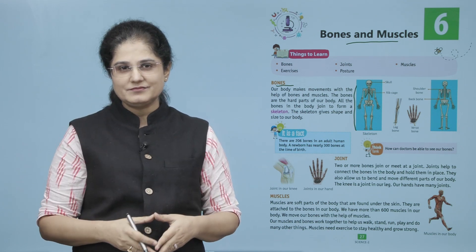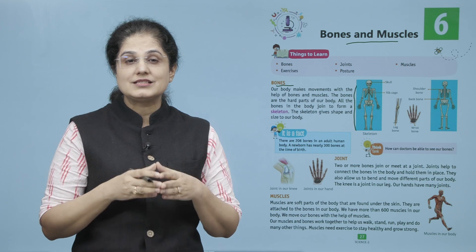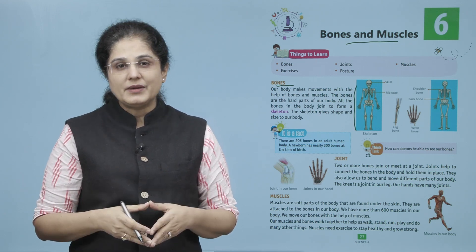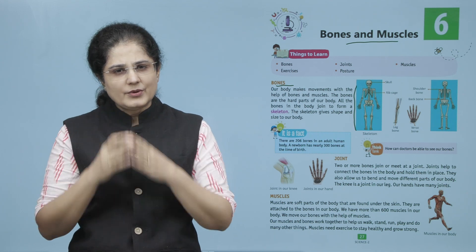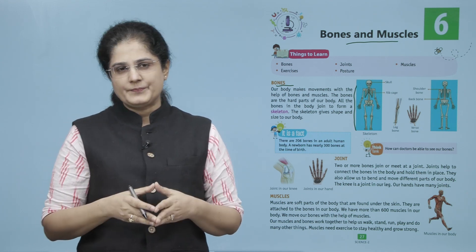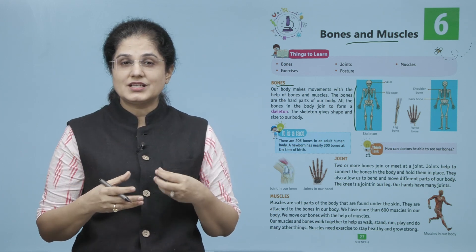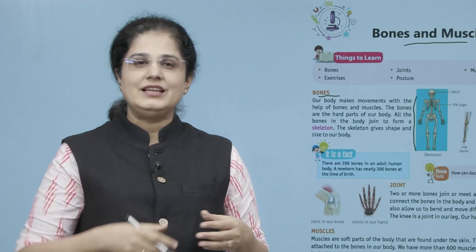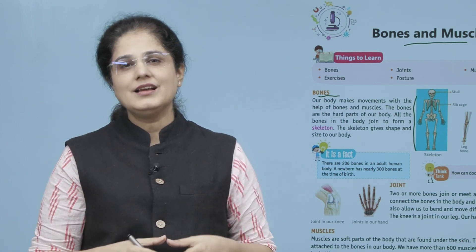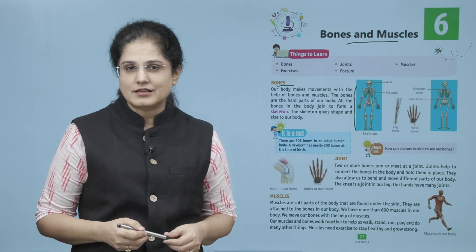Now it is a fact: there are 206 bones in an adult human body. A newborn baby has nearly 300 bones at the time of birth. جو بچہ جب پیدا ہوتا ہے اس کے اندر 300 ہڈیاں ہوتی ہیں، لیکن جیسے جیسے وہ grow کرکے adult بنتا ہے تب صرف 206 ہڈیاں رہ جاتی ہیں۔